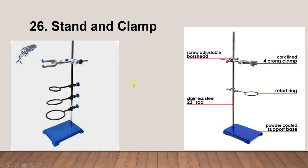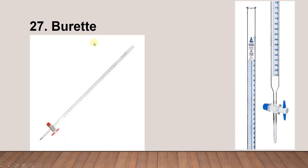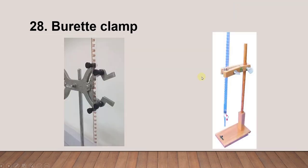Next is the burette. This is very important for titration — when you work on titration you need to use a burette. And of course, when you work with a burette you need a burette clamp. As you can see here, we have two different types of burette clamp.